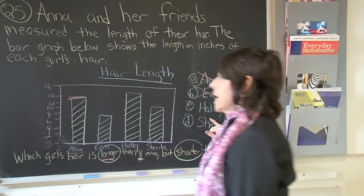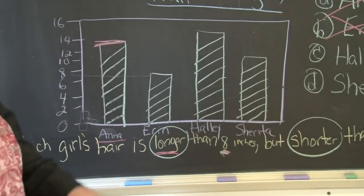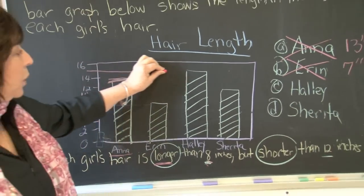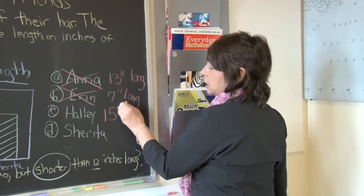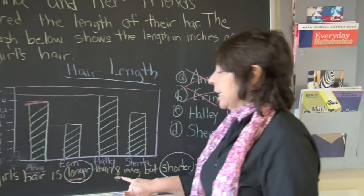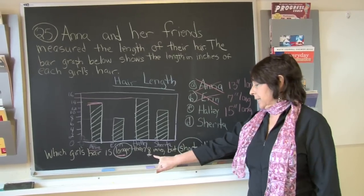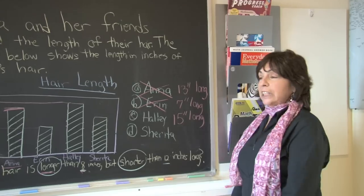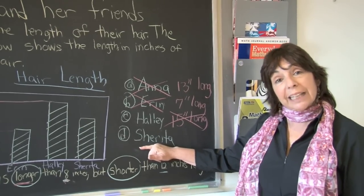Let's take a look at Hallie's hair. Hallie's hair is between fourteen and sixteen — counting: fourteen, fifteen, sixteen — so fifteen is the number in between. Hallie's hair is fifteen inches long. Is fifteen longer than eight? Yes, it meets the first criteria. Is it shorter than twelve? No, fifteen is longer than twelve. So it cannot be Hallie.